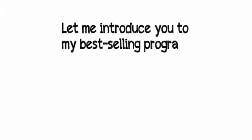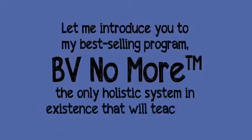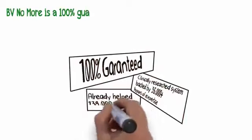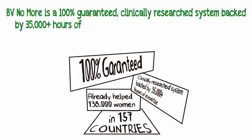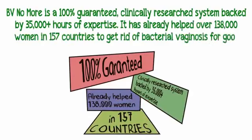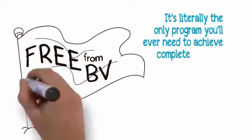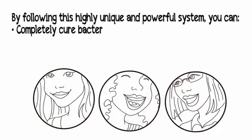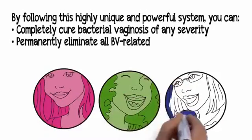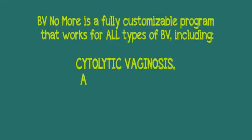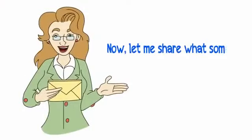Let me introduce you to my best-selling program, BV No More, the only holistic system in existence that will teach you how to achieve lasting freedom from bacterial vaginosis and dramatically improve your well-being. BV No More is a 100% guaranteed, clinically researched system backed by 35,000 plus hours of expertise. It has already helped over 138,000 women in 157 countries to get rid of bacterial vaginosis for good. It's literally the only program you'll ever need to achieve complete freedom from BV and maintain it for life. By following this highly unique and powerful system, you can completely cure bacterial vaginosis of any severity, permanently eliminate all BV-related symptoms, enjoy sex once again, and improve your health. BV No More is a fully customizable program that works for all types of BV, including cytolytic vaginosis, atrophic vaginitis, and gardenerella vaginitis. Now let me share what some of my clients had to say.